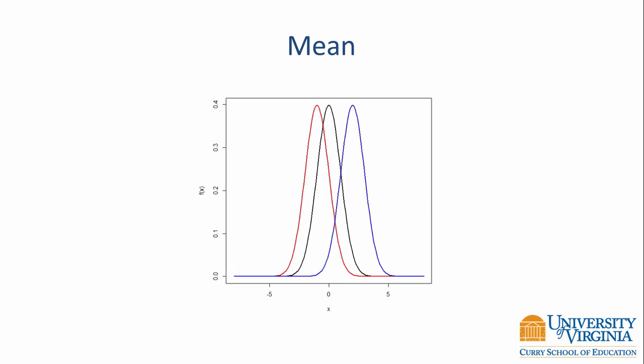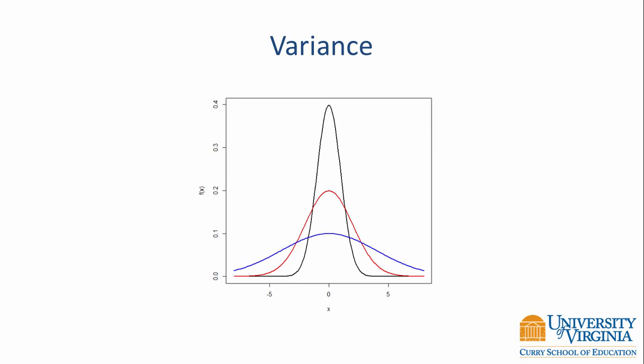The variance affects the spread of the distribution. If we start with a standard normal distribution where the variance is 1 and then we switch to a distribution where the variance is 4, you can see how the distribution flattens out. It's still a symmetric bell-shaped curve, but the peak of the curve is much lower. If we increase the variance again, this time to 16, the curve flattens out even further. These are all normal distributions, but by changing the mean and the variance, we can affect the location and the spread of the distribution.